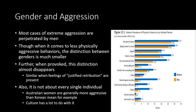Looking at gender and aggression — when it comes to extreme cases of physical violence, they are almost always committed by men as opposed to women. But when talking about less extreme physical cases, the distinction between genders in committing aggressive behaviors is actually much smaller than many people think. This difference can be almost entirely removed when you provoke individuals — when either males or females are provoked, they will both tend to show aggressive tendencies in pretty much the same way.